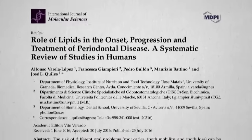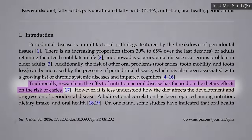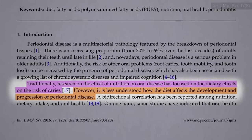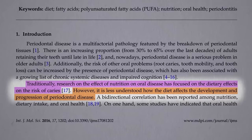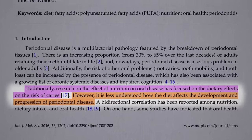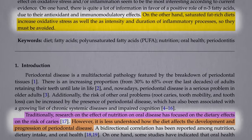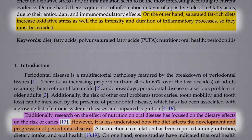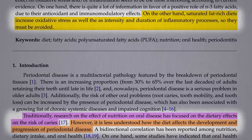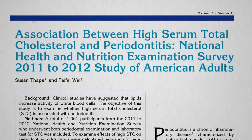Traditionally, when we think of the effects of nutrition on dental diseases, we only think about cavities. However, there's been less research on the role of diet in periodontal diseases. If it's about inflammation, one would expect saturated fat-rich diets to make things worse, increasing oxidative stress as well as inflammation, so we may want to cut down on saturated fat. But let's not just speculate — is there an association between cholesterol levels and periodontitis?